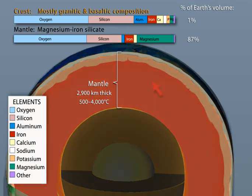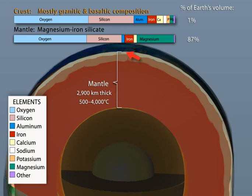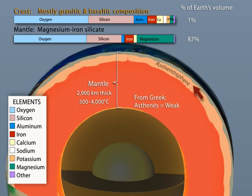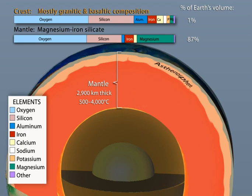The uppermost mantle is relatively cool and brittle and ranges from 50 to 120 kilometers thick. Below this zone, the upper mantle becomes notably more plastic and malleable due to the right combination of heat and pressure. That ductile zone is known as the asthenosphere and varies up to 400 kilometers deep, depending mainly on temperature.